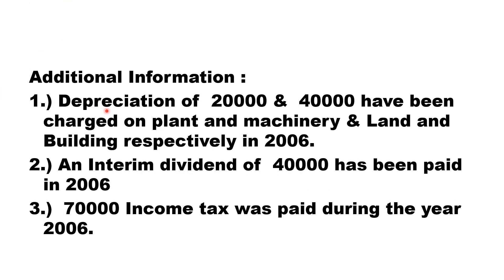Additional information: depreciation of rupees twenty thousand and forty thousand has been charged on plant and machinery and land and building respectively. All adjustments will come at two places — this depreciation will come in respective ledger accounts and also in operating activity as an addition. Interim dividend of forty thousand was paid in 2006, appearing in proposed dividend account and finance activity. Seventy thousand income tax was paid during the year, appearing in provision for tax account and operating activity.